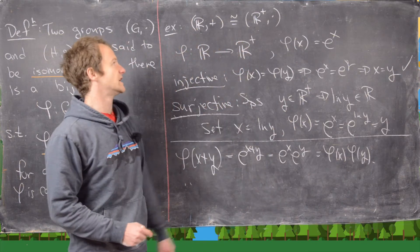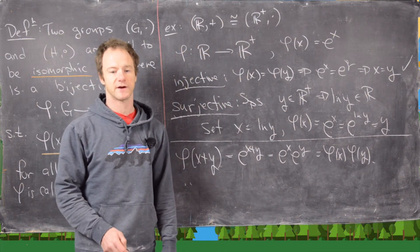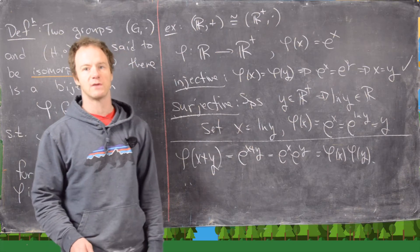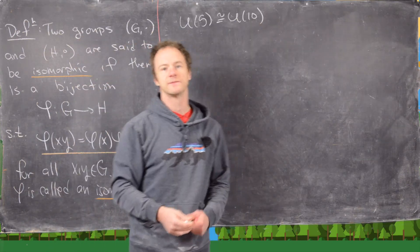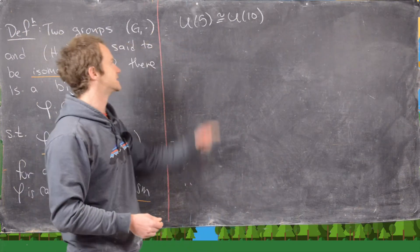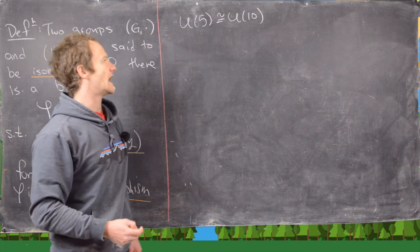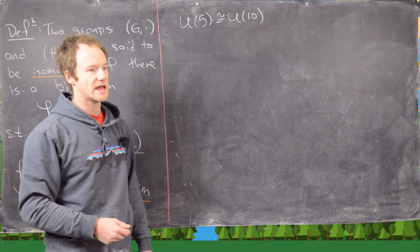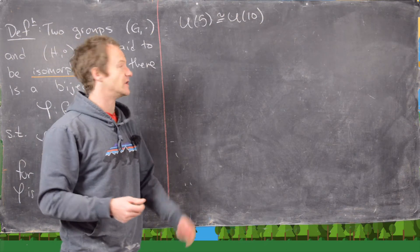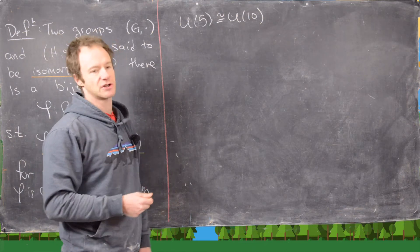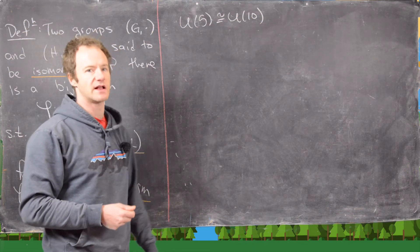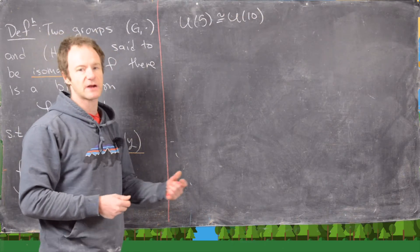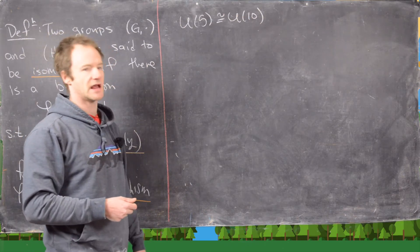So these two groups are isomorphic. Now let's look at one more example: U₅ ≅ U₁₀. Recall that Uₙ is the group of units modulo n — everything relatively prime to n, with 1 ≤ element ≤ n, under modular multiplication.